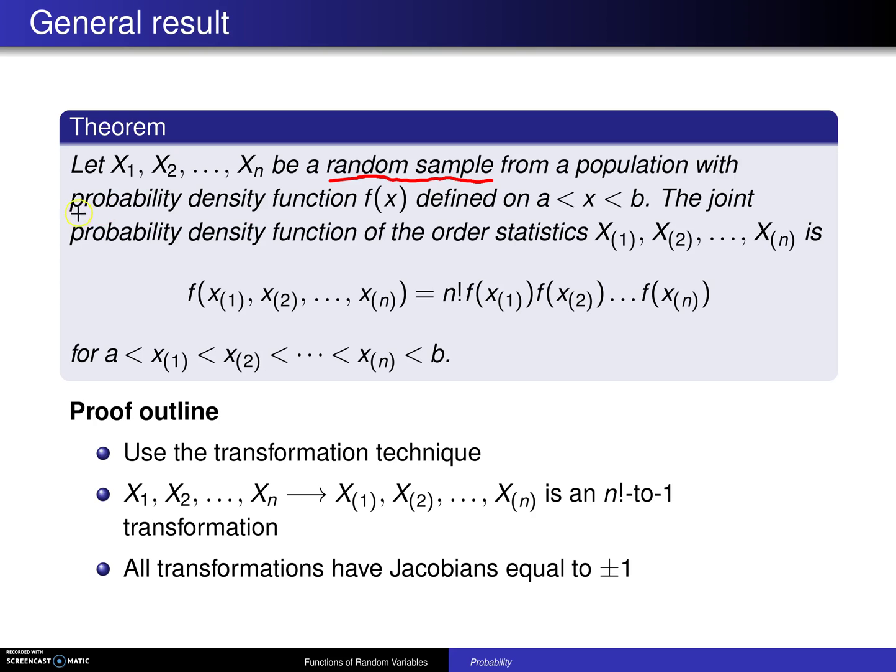Second of all, by saying that these come from a population with probability density function f of x, the fact that this is a density function and not a probability mass function also says that this population must be a continuous population.